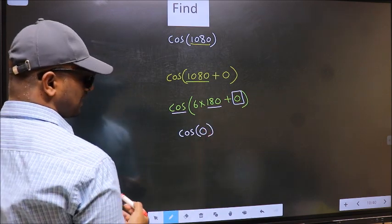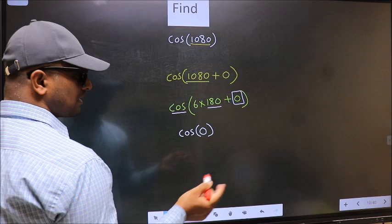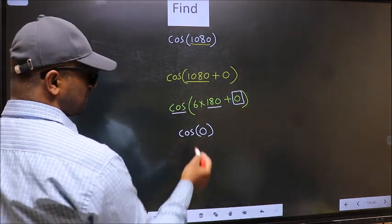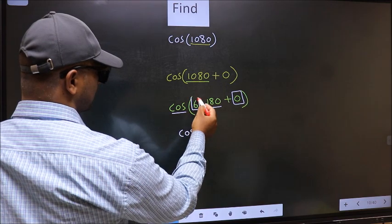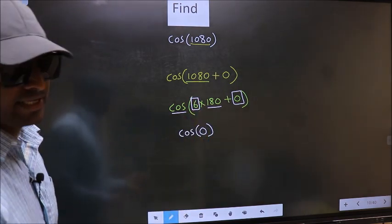Now, the question is, will we get here plus or minus? To answer that, we should look at the number before 180, that is 6. And 6 is even.